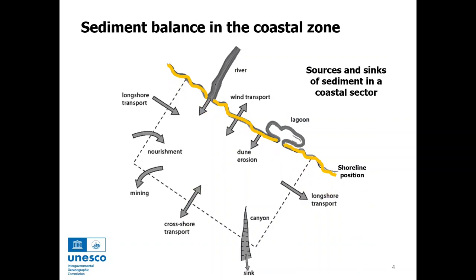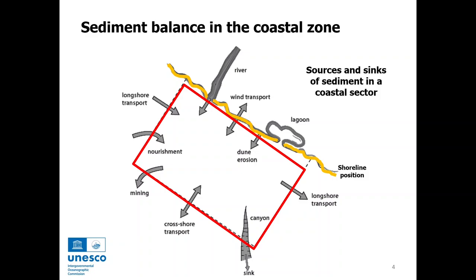In order to understand why the shoreline position of a given coastal sector is suffering erosion, we need first to understand the sediment balance within this sector. The sediment balance is the result of the difference between the amount of sediments that are entering this sector and the amount of sediments that are leaving this sector. In this sketch, it is possible to identify the main sources and sinks of sediment to a given coastal sector.